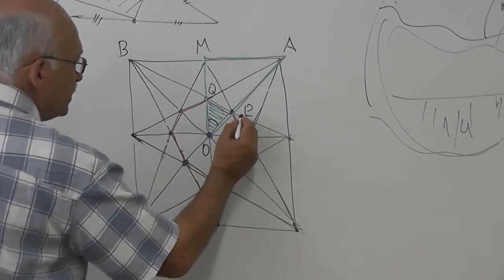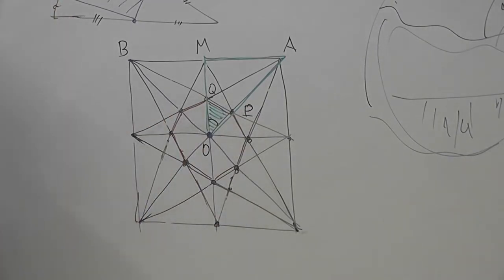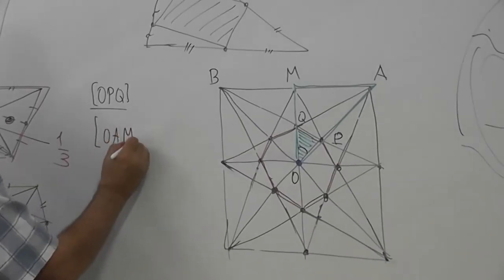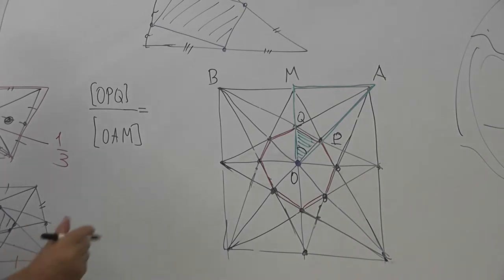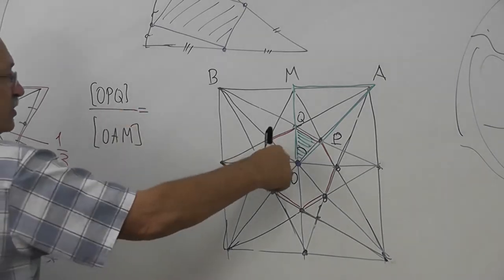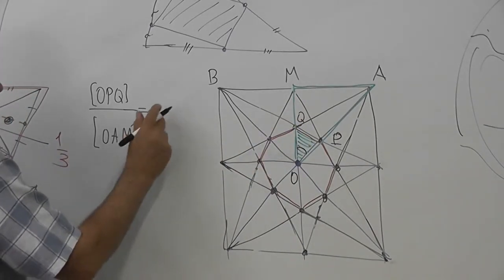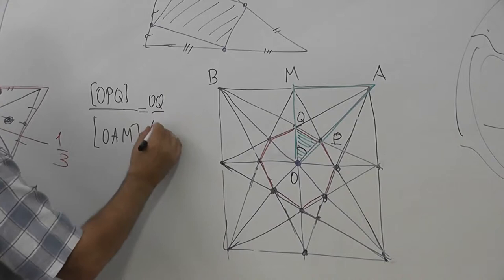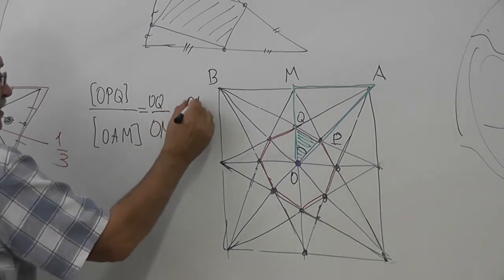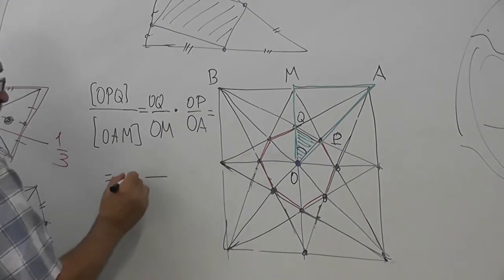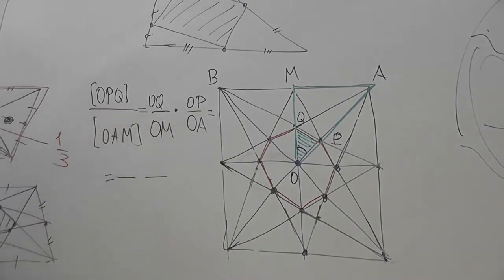This is P. It is better to write OPQ to OAM and it is equal to what ratio? OAM divided by OPQ times OP divided by OA. And now let's replace this ratio by the numeric values and numbers.